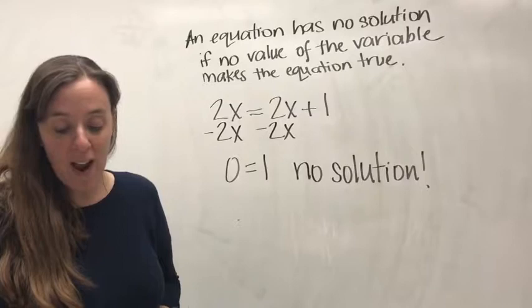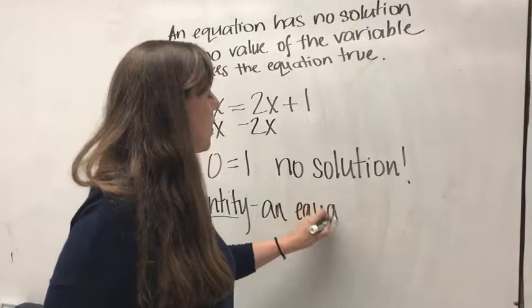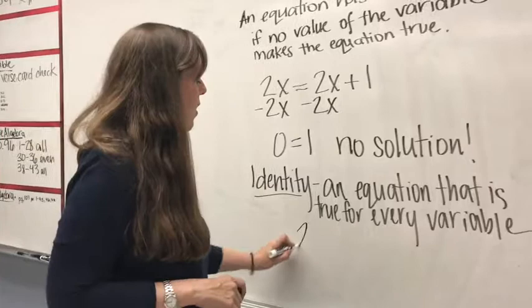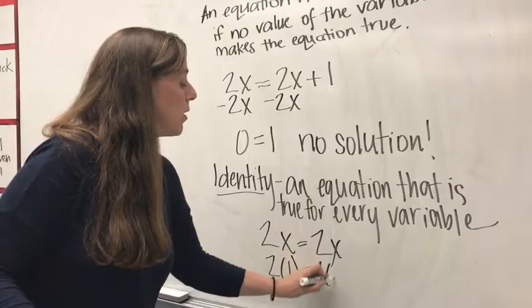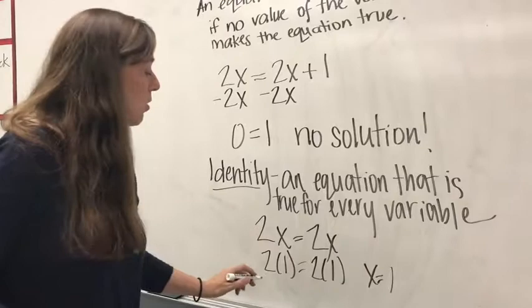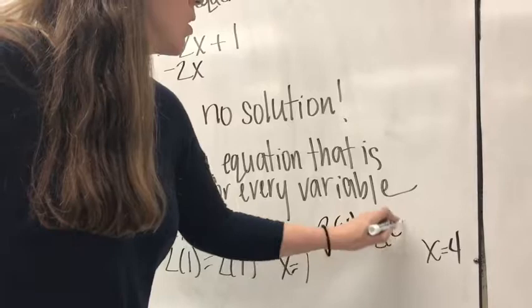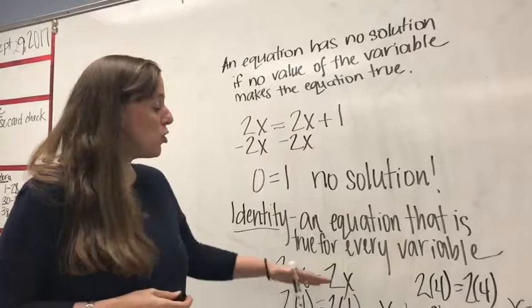An equation that is true for every value of the variable is called an identity. For example, 2x equals 2x: if x equals 1, then 2 equals 2 — true. If x equals 4, then 8 equals 8 — true. No matter what you plug in for x, it's always going to be true, so 2x equals 2x is called an identity.